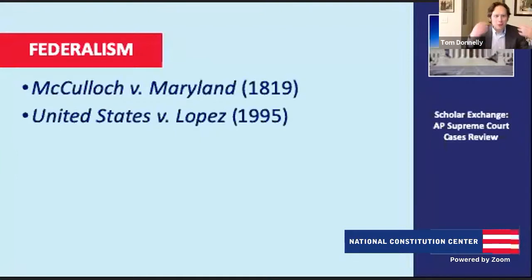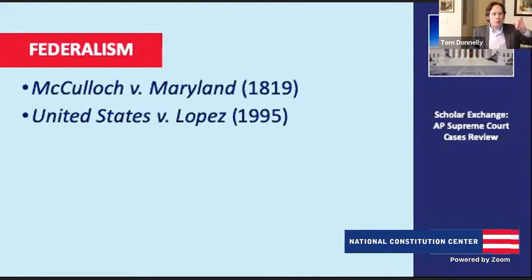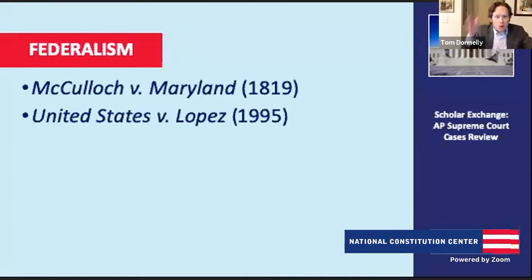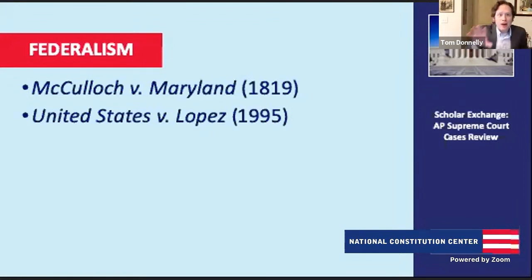When we speak of federalism, what we're really talking about is the great debate over which powers go to the national government and which powers go to the states. When we created and ratified a new constitution, we created a national government with more powers than it had before — but at the same time it was a government of limited powers, and states continued to play a central role. We see this in two cases: McCulloch v. Maryland from the Marshall Court giving a broad reading of congressional powers, and United States v. Lopez from the Rehnquist Court saying we are still a national government of limited powers.